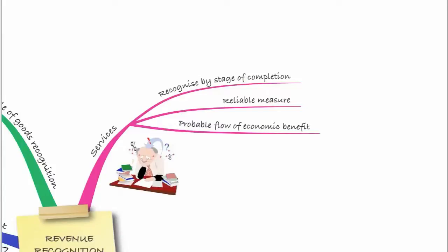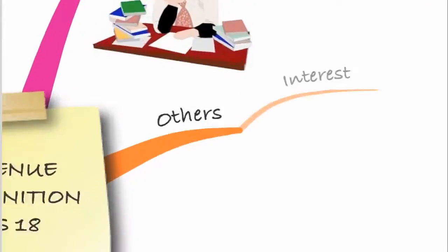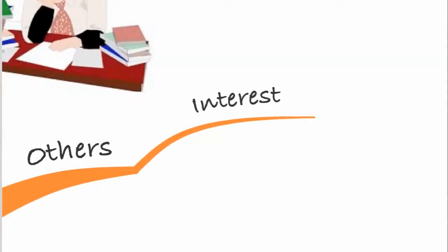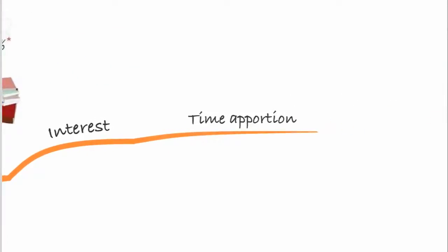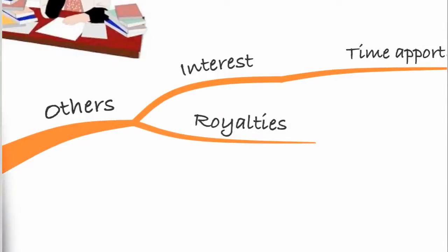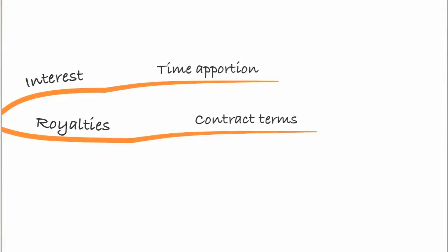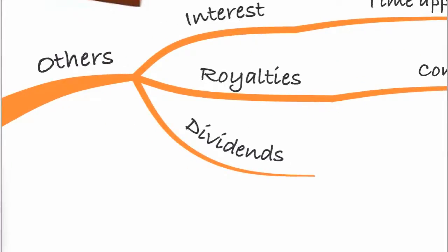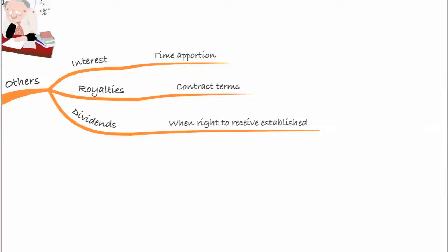Before doing an example, here are some specific types to look out for. Interest is recognised on the accruals basis — you time-apportion interest being received. Royalties depend on the contract terms — you recognise revenue based on those terms. Dividend income is recognised when the right to receive it is established, which is generally when the dividend is announced.